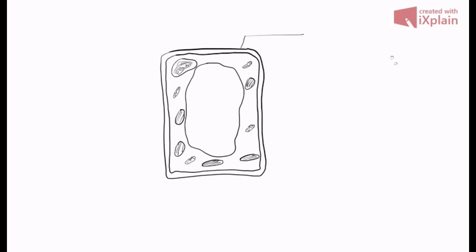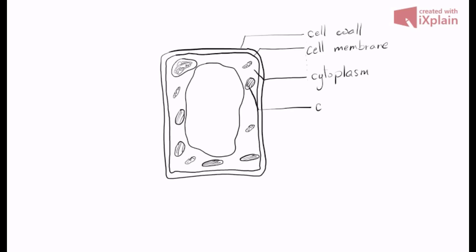In terms of parts, let's label. Remember, our lines end horizontally. In this case the outer boundary is called the cell wall, and then you have the inner part, the cell membrane. We also have cytoplasm. Remember to keep labels justified. And let's label the chloroplast.